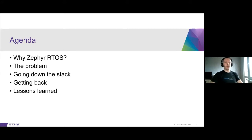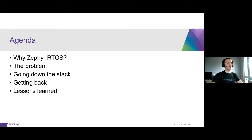Today we're going to talk about debugging one interesting problem we faced during automated testing of Zephyr RTOS on simulated ARC platforms. We'll start with a brief explanation of Zephyr RTOS and why this happened. Then we'll see how the problem was initially observed, go through the steps to get to the root cause, figure out how to solve it, and end with a couple of useful suggestions.